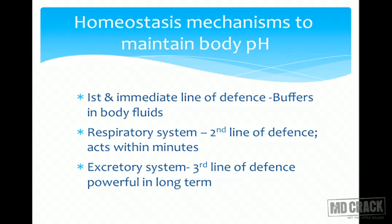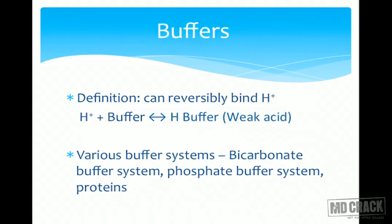The kidneys provide the most permanent solution, mainly for non-volatile acids. The kidneys can excrete H+ ions, absorb all filtered bicarbonate ions, and if required, synthesize new bicarbonate ions. Kidneys can handle both acidosis and alkalosis and play a very important role in the regulation of pH of the body fluid.